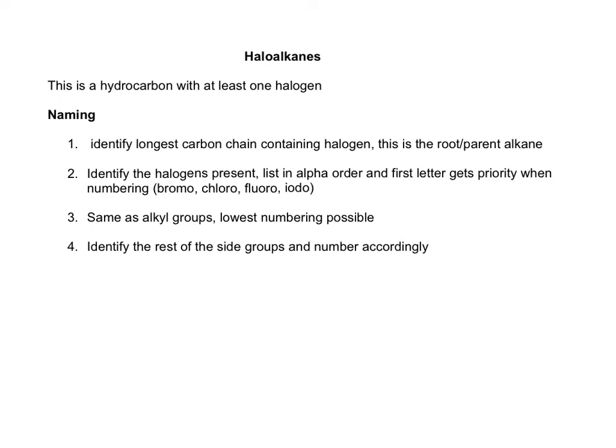Haloalkanes. This is a hydrocarbon that contains at least one halogen. Now to name them, what we have to do is identify the longest carbon chain that includes the halogen, and this becomes the root or the parent alkane.